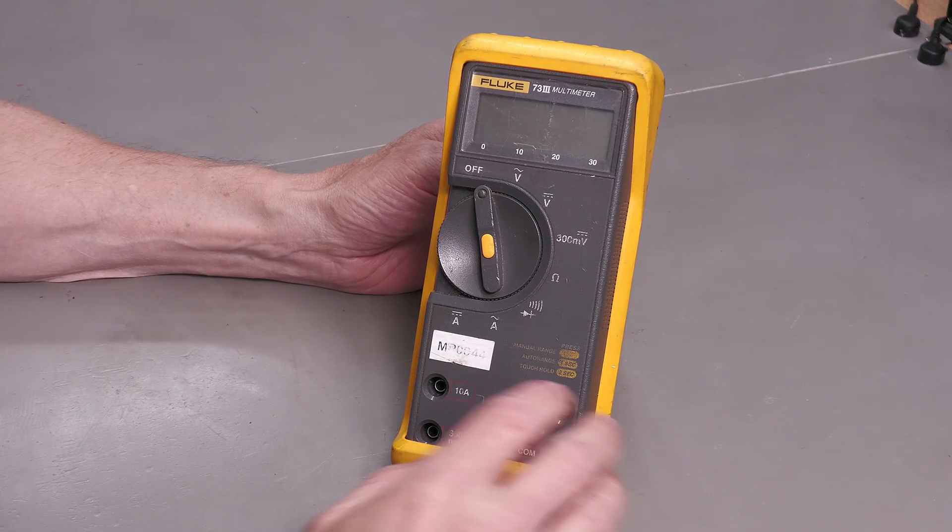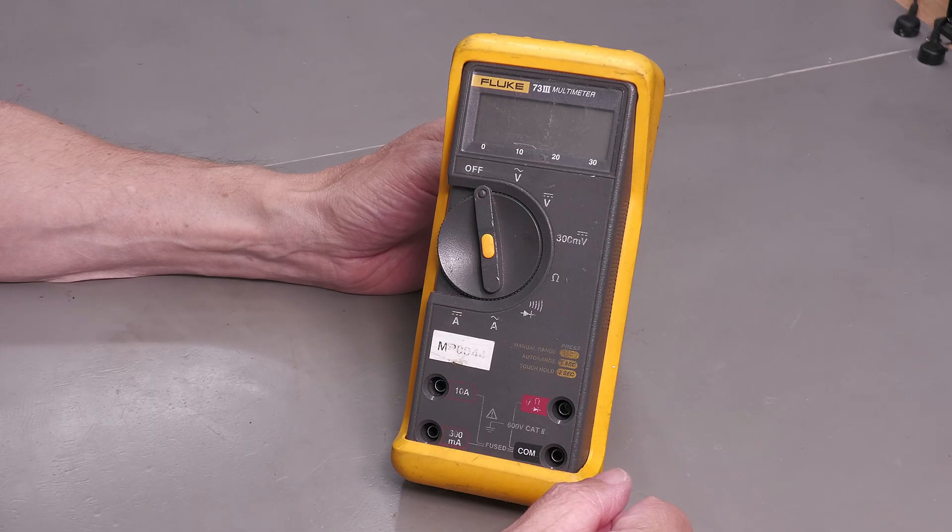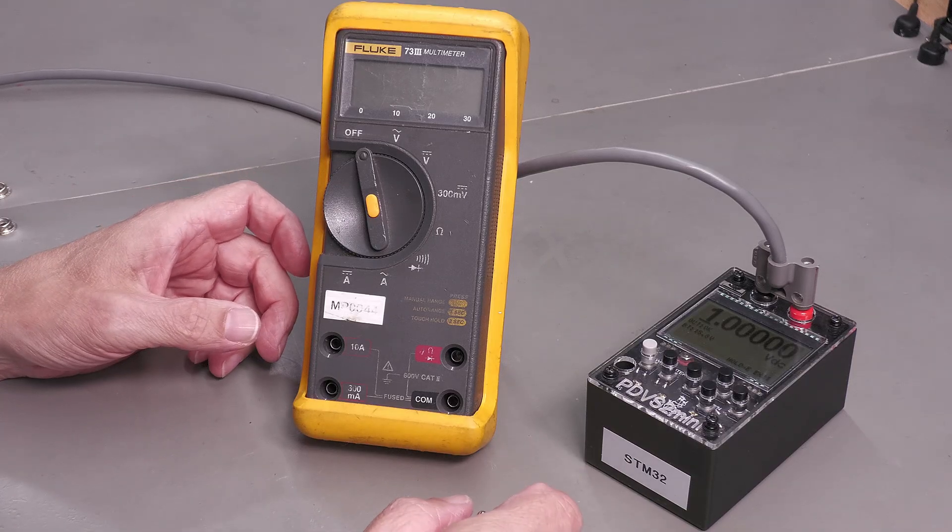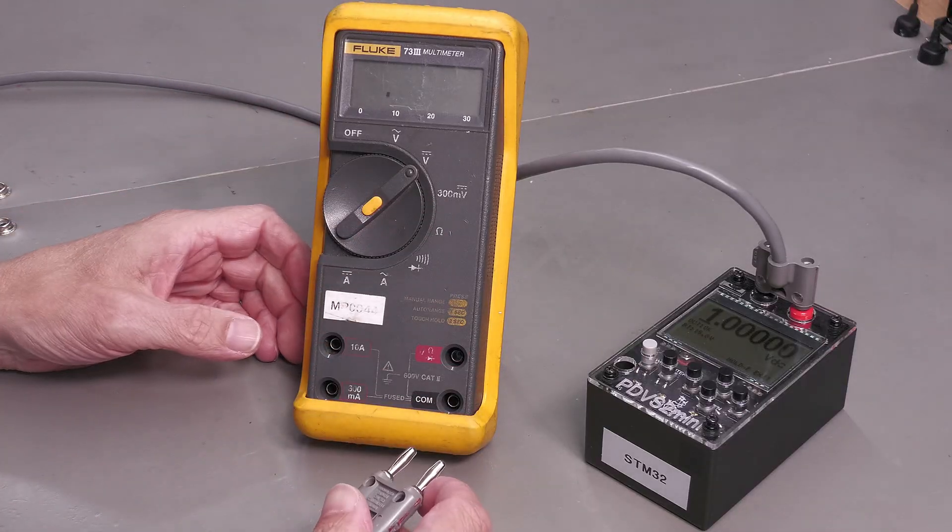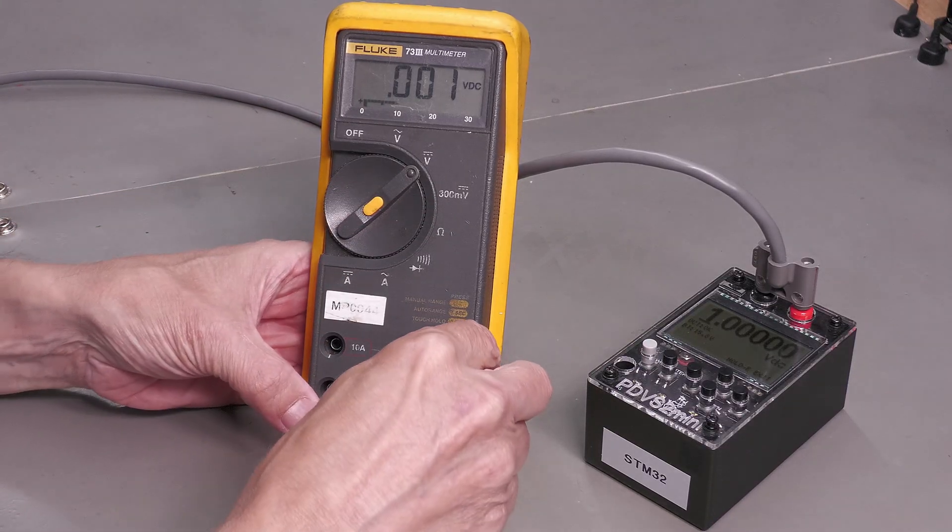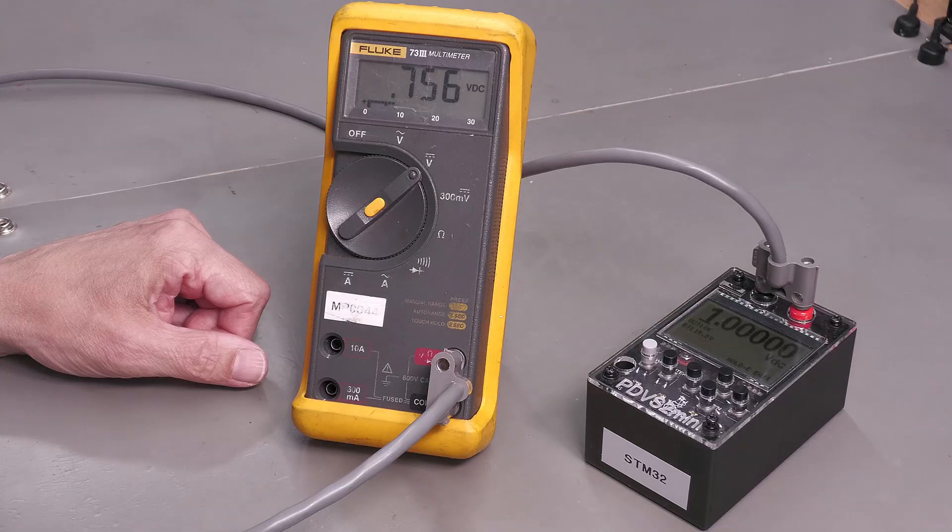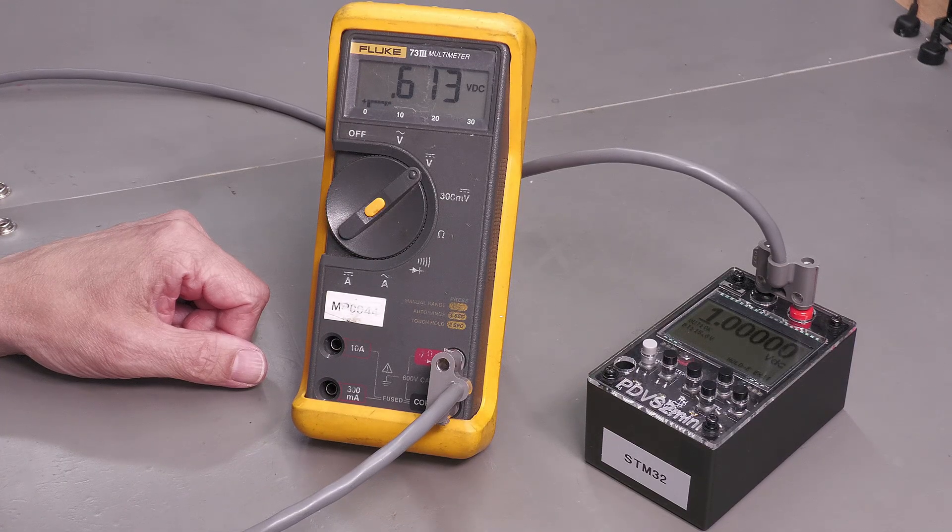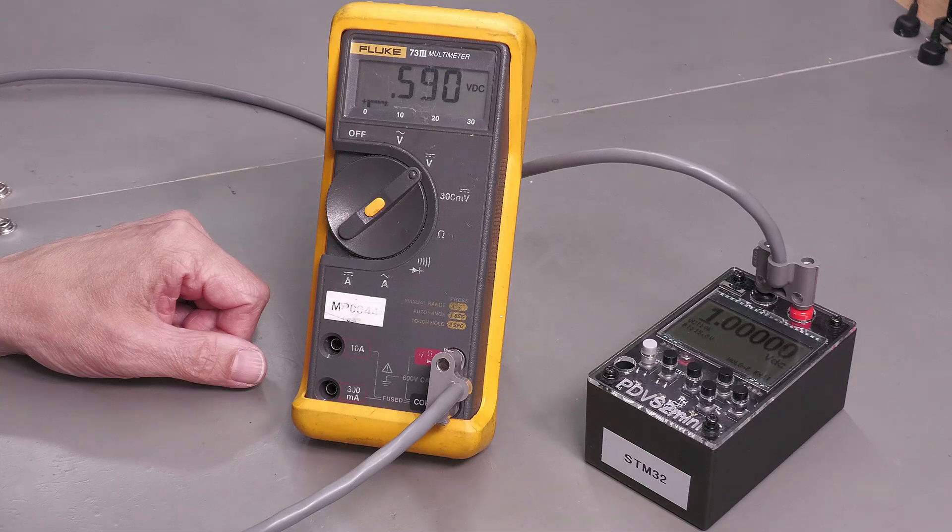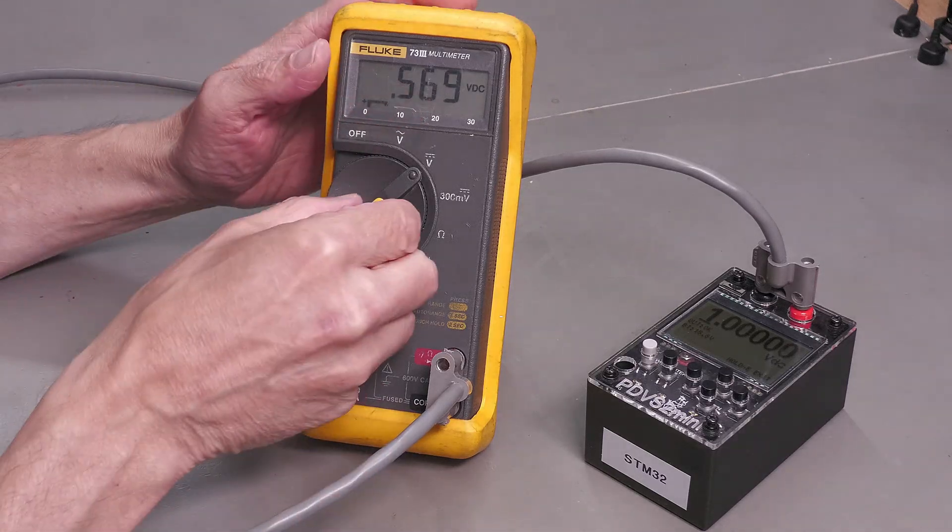So let's go around the inputs and see what we can find. I've got my PDVS 2 mini set to 1 volt so we'll go to VDC and let's just see what we get. And it's reading low and it doesn't appear to be very stable either.